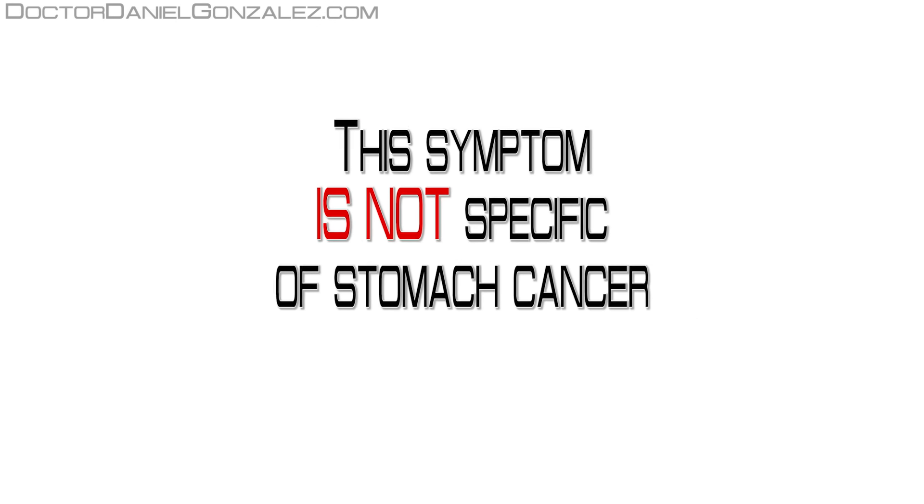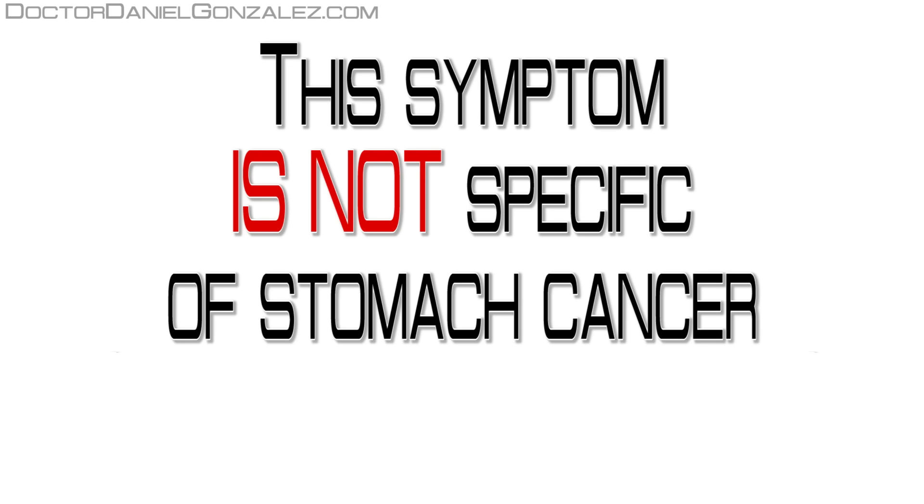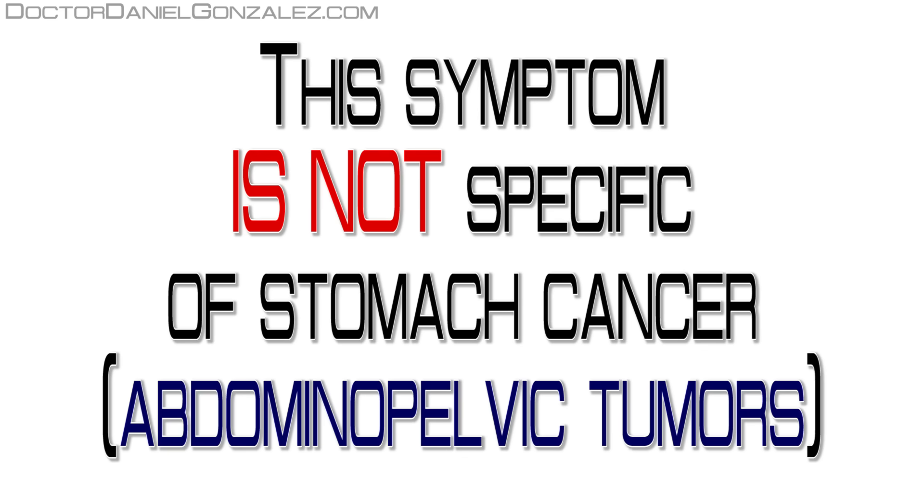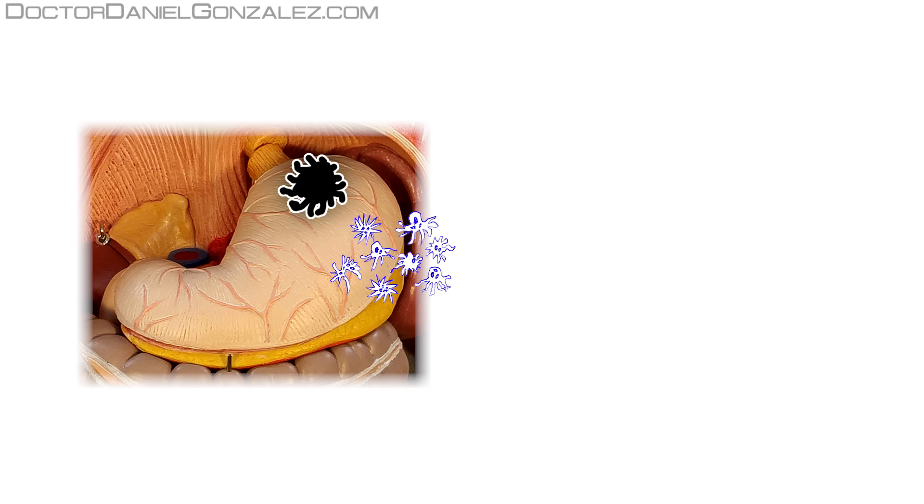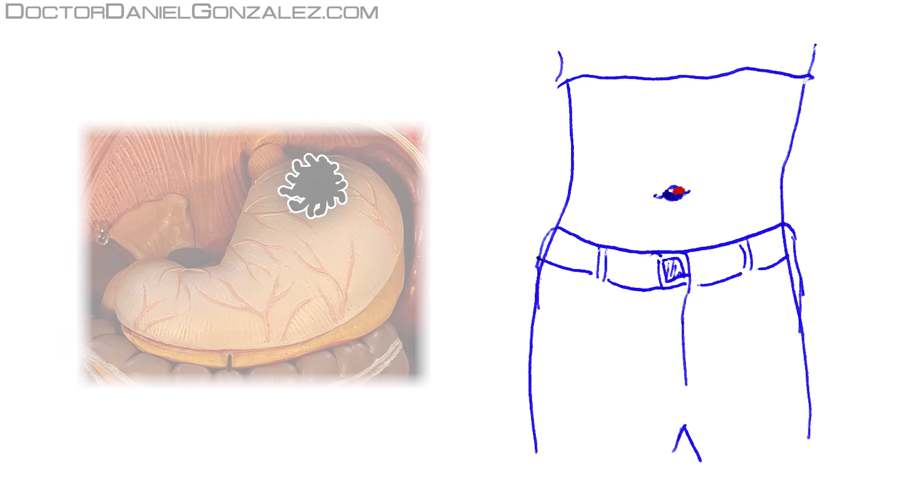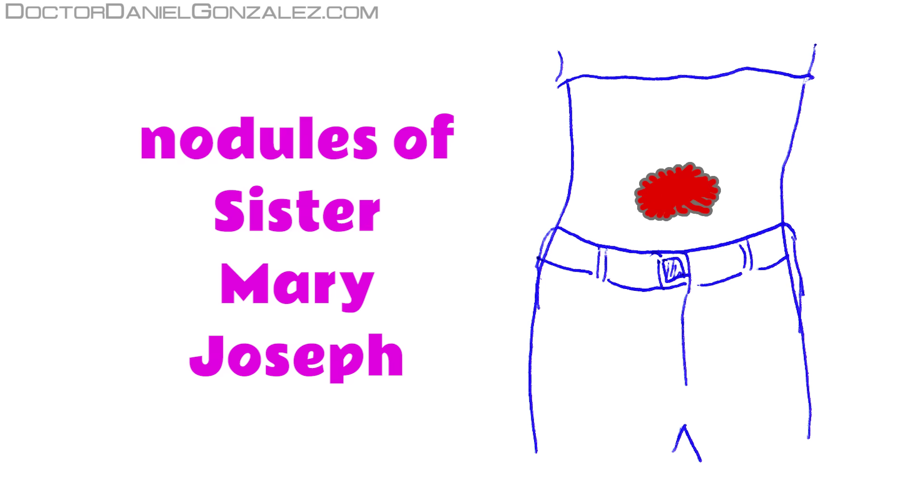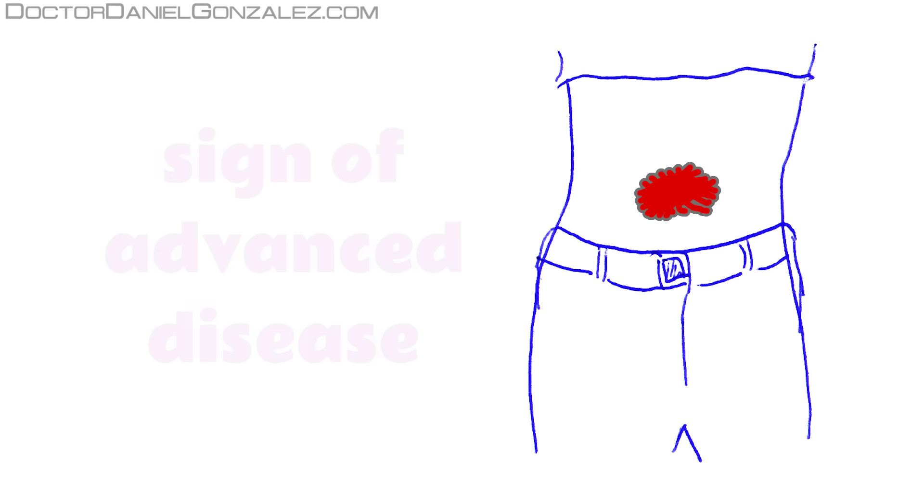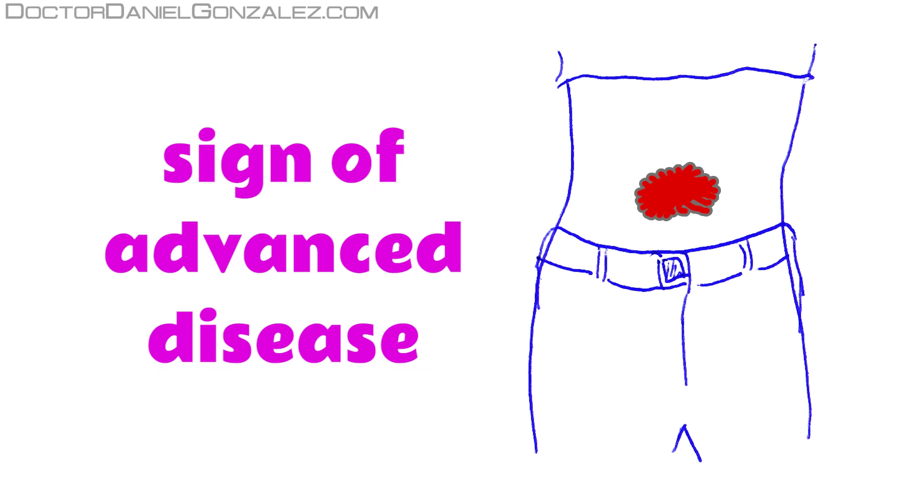Although not exclusive of stomach cancer, as it can appear in many tumors of the abdominal and pelvic viscera, when tumor cells travel to the navel, they can settle there, originating lumps called nodules of Sister Mary Joseph. These lumps are clearly seen from the outside. Usually, they are a sign that the cancer is in an advanced stage.